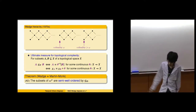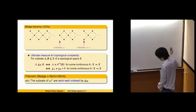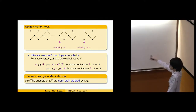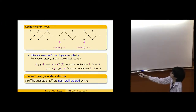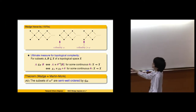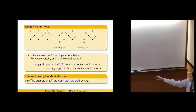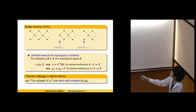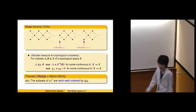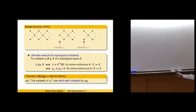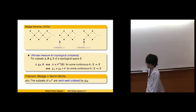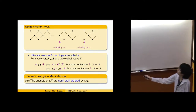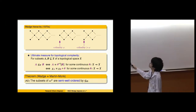This is a topological version of many-one reducibility. We can also consider Wadge reducibility for functions by identifying sets with their characteristic functions. A is Wadge-reducible to B if and only if the characteristic function of A equals the composition of the characteristic function of B with a continuous function.